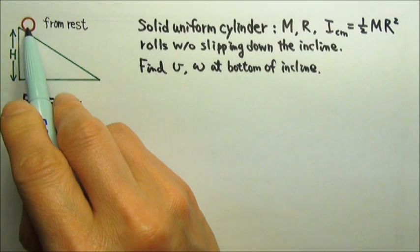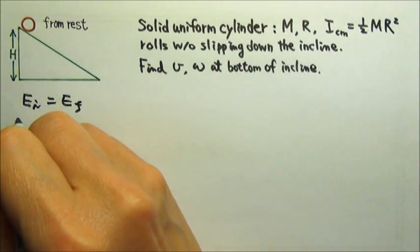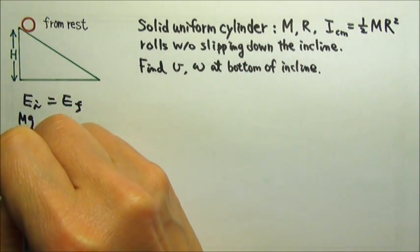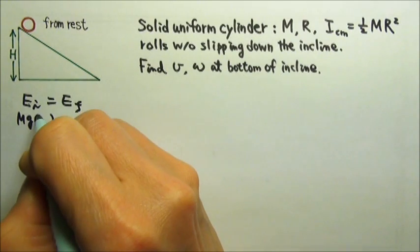Initially, the cylinder is at rest, no kinetic energy, but it's up high. At the bottom of the incline, it has a gravitational potential energy, mgy. And what is the height above ground? It's h.